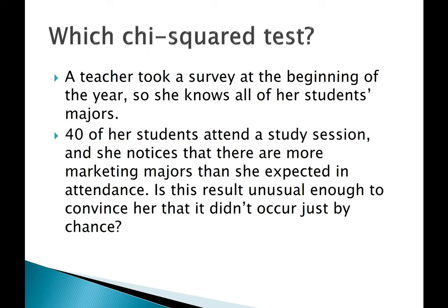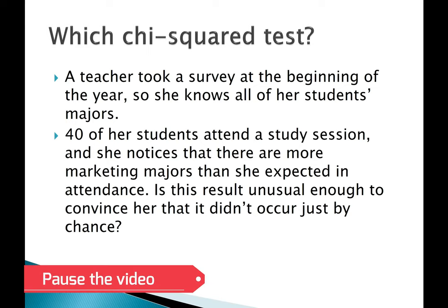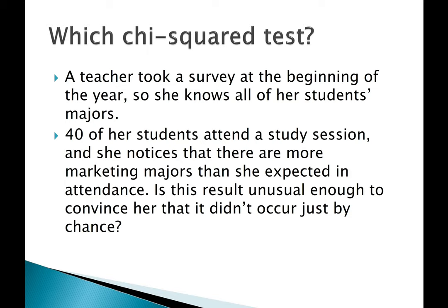In the chi-squared example provided, this is a goodness-of-fit test. The teacher knows what the distribution of majors should be in the population. At the study session, she surveys attendees asking only one question — what is your major? — to see if the observed distribution matches the expected population values. Since there's one variable and a known model to compare against, this is a chi-squared goodness-of-fit test.